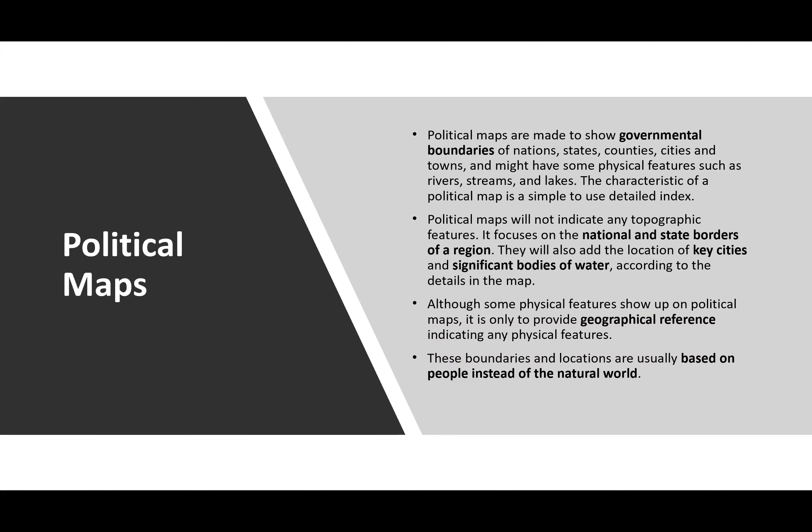Political maps are another type of reference map made to show governmental boundaries — between nations, states, counties, cities, and towns. There might be physical features associated with the politics of a place. For example, the Ohio River is a dividing line between Ohio and Kentucky. Political maps are simple to use and have a detailed index with keys and legends. They typically don't indicate much topographic information and focus on national and state borders.